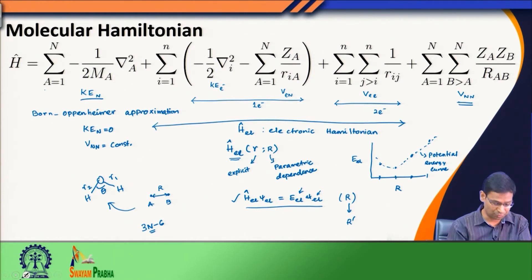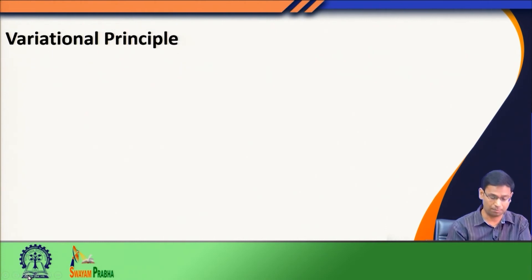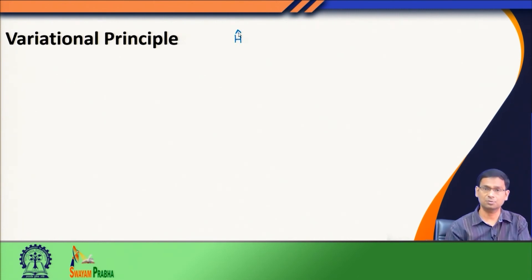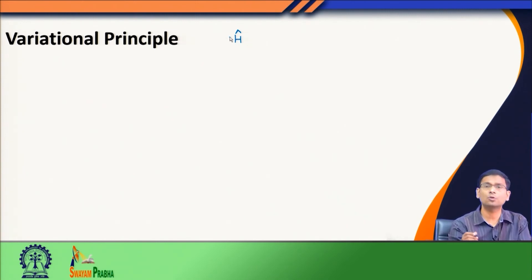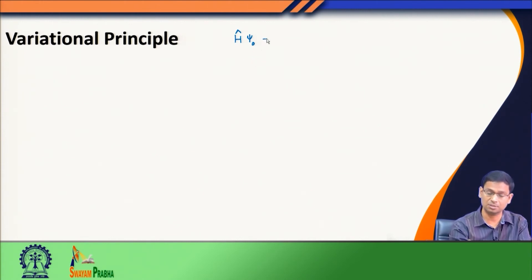This is what we are going to discuss: we will now talk about some approximate methods and how we can go about them. The first one we discuss is known as the variational principle. We have a Hamiltonian which is very complex — it has two-electron operators. Suppose we know the solution of this problem; of course the point is we do not know. But suppose we know the exact solution and we call the ground state lowest eigenfunction ψ₀ and the corresponding energy E₀.